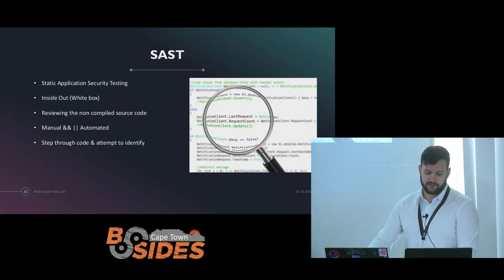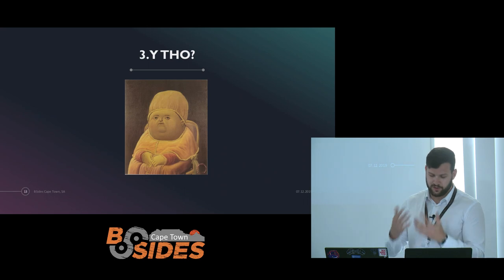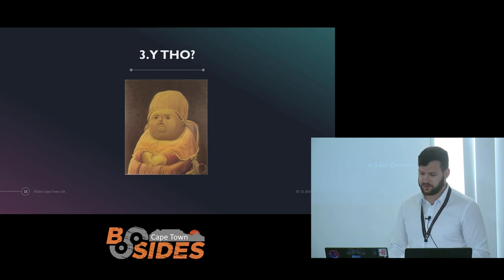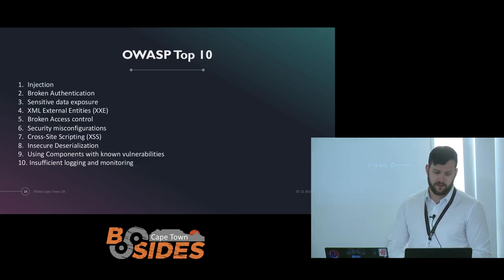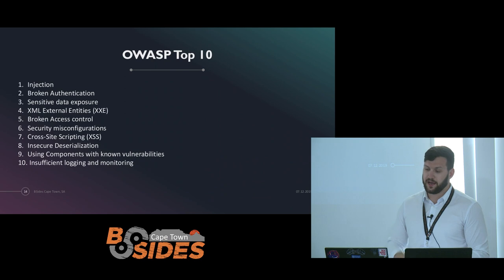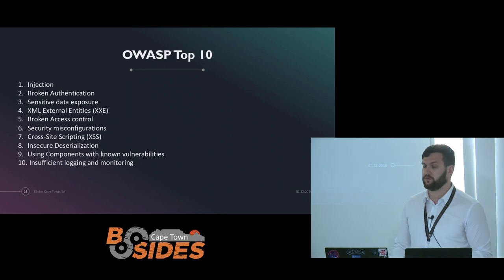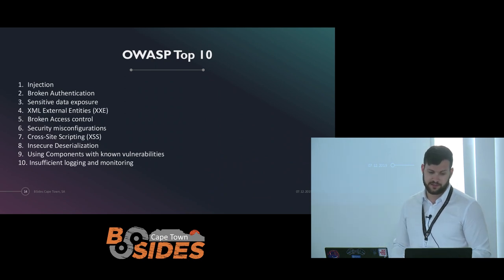We'll be focusing on the DAST tools in this talk. I want to explain why we need them. The OWASP Top 10 is a very common framework people work from when performing web app tests to identify different vulnerabilities. They release a list every three to five years on the most commonly reported vulnerabilities. Web app scanning tools will attempt to discover many of these — they will succeed for a lot and fail for others.